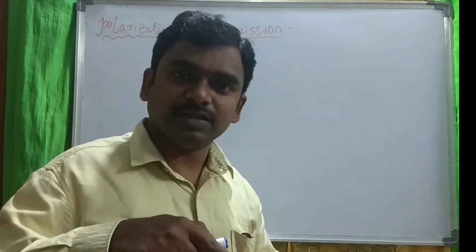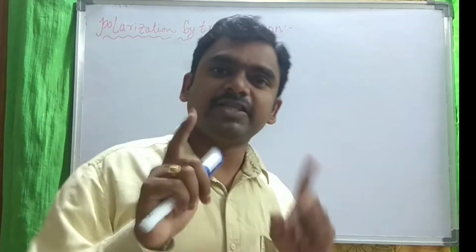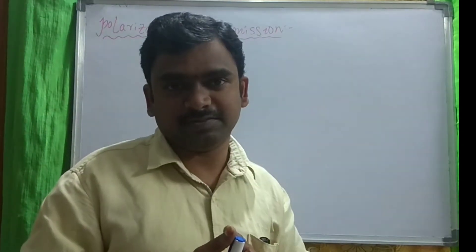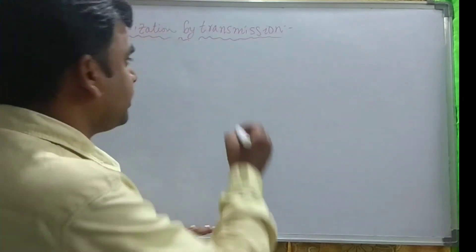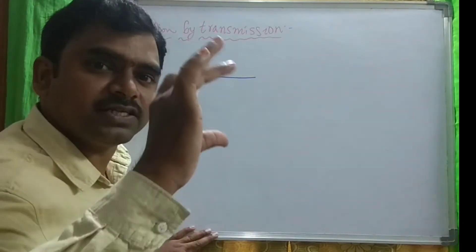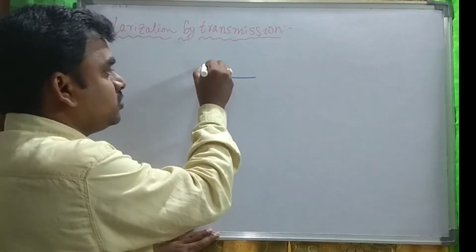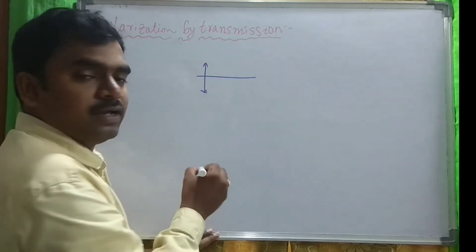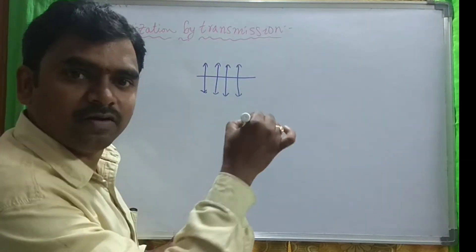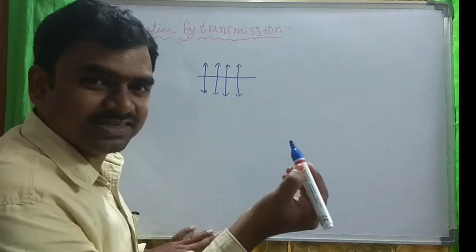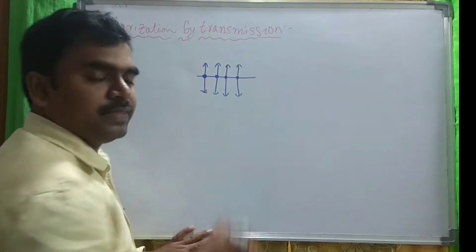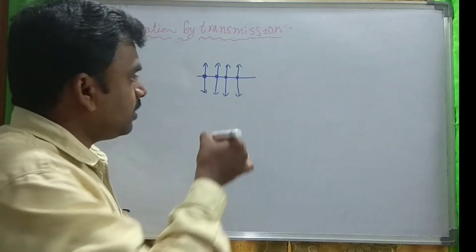That means, if light is passing in one direction, for the perpendicular direction these vibrating particles are perpendicularly oscillating. As we represented in our previous class — if light is passing like this, some of the particles are vibrating like this, meaning those are vertical vibrations. And some of the vibrations are perpendicular to the board, so it is impossible to represent them like this. That's why I am representing them with dots. This is the unpolarized light representation.